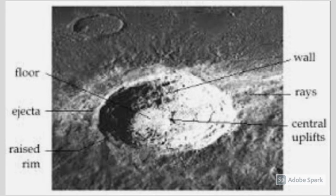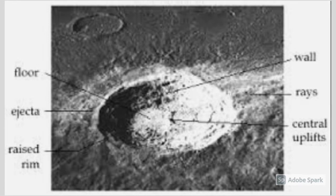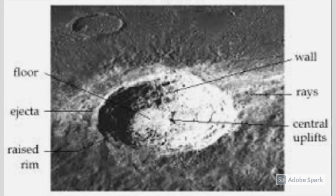The ejecta is material excavated from a crater cavity during impact. Most ejecta will form a layer of debris surrounding the crater cavity. And lastly, the floor of the crater can be defined as the bottom of the crater, either bowl-shaped or flat, depending on the type of crater.